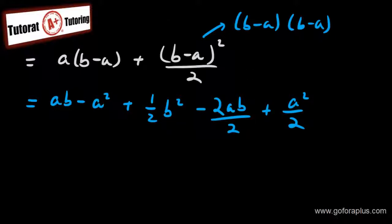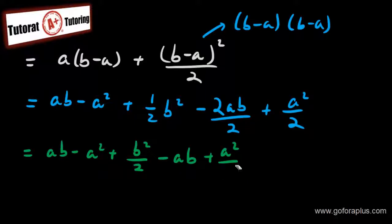So I can simplify this further. ab minus a square plus b square over 2, minus ab plus a square over 2. So simplifying ab minus ab, and then minus a square plus a square over 2, which is giving you minus a square over 2.